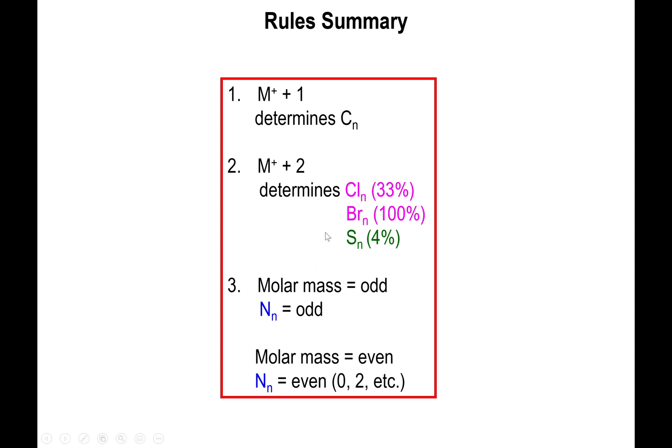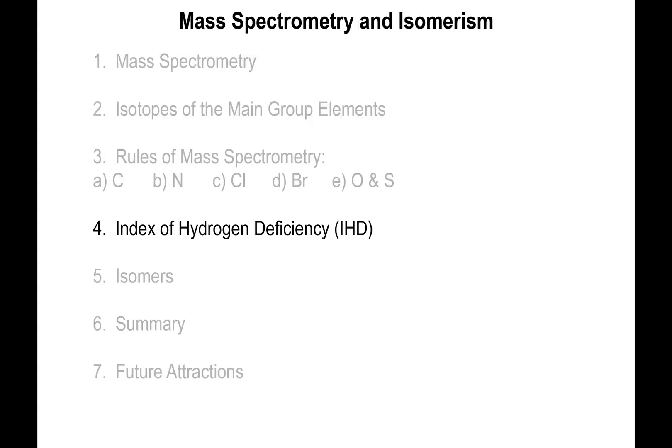If none of these situations are met, or you don't have an M+2 peak but you have too many hydrogens after your determination, that may indicate oxygen is present in your molecule. In the next video, we're going to talk about the index of hydrogen deficiency and start delving into drawing actual isomers for molecules.